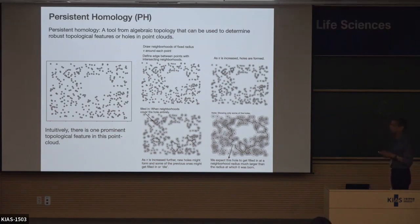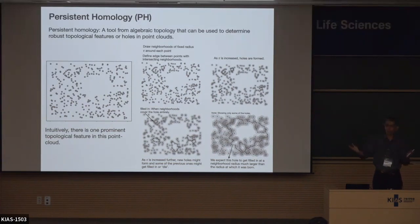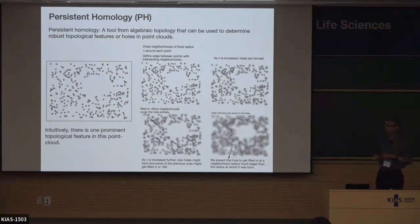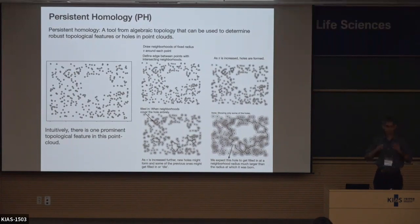Persistent homology is a way of trying to compute the homology when you don't have some continuous nice manifold — what you have is a bunch of data points. You're trying to figure out where are the regions where there isn't any data — there's a hole. How do I quantify in this noisy data set that this is not a significant hole and this is a significant hole? That's the whole aim: to quantify the significance of these holes and when they exist.